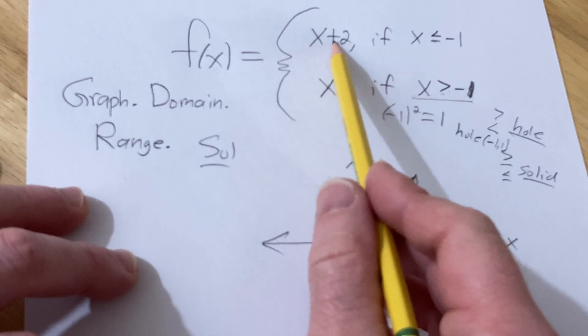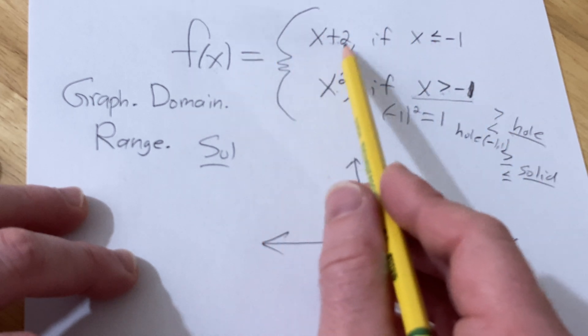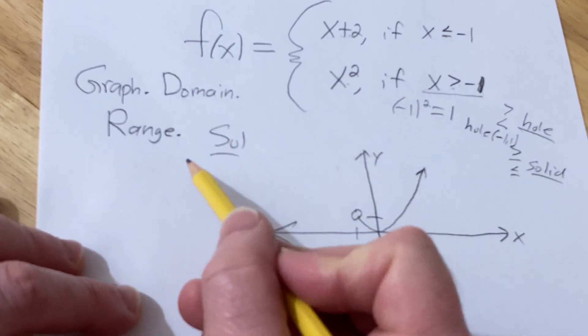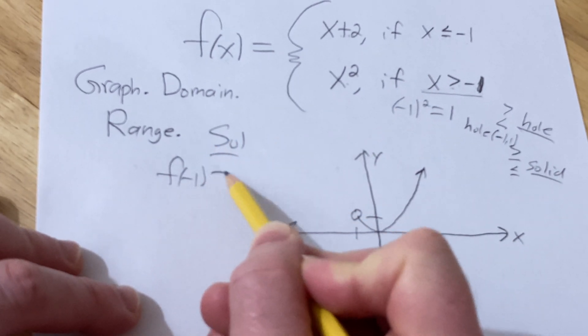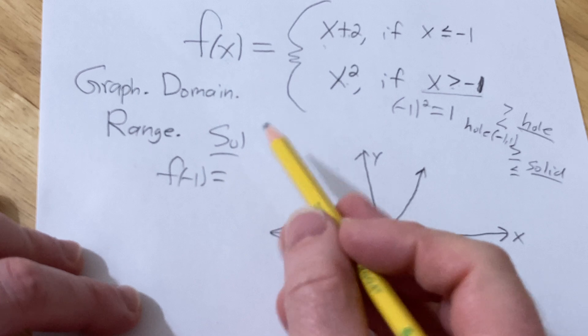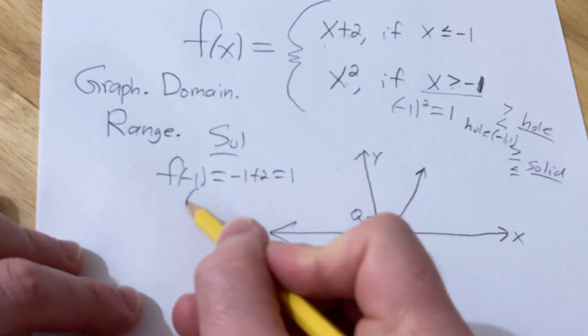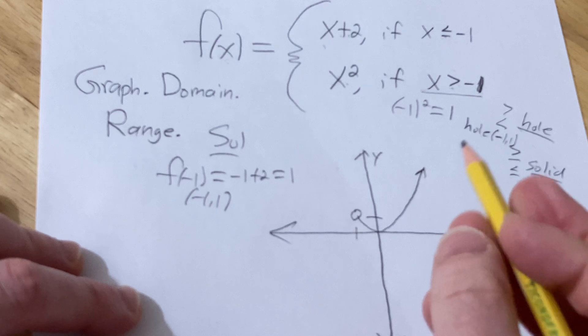Now we have to graph this one. This one's a little bit easier, so now we just plug in negative 1 to find the y-value here. Let's do it, so that would be negative 1 plus 2, so that's 1. Oh look at that, negative 1 comma 1, we have a solid dot.